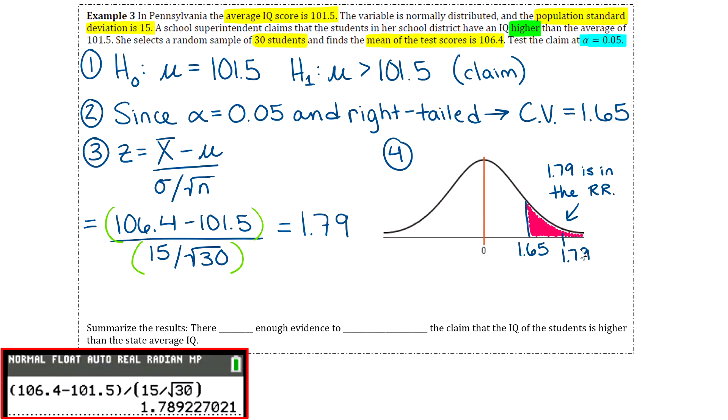1.79 is in the rejection region. If it falls into the rejection region, then that tells you that your decision should be to reject the null hypothesis. That's our decision that we are rejecting the null.